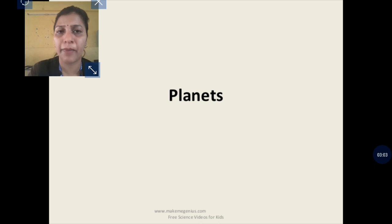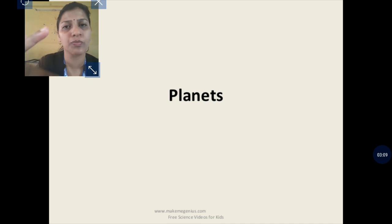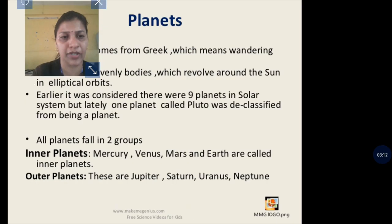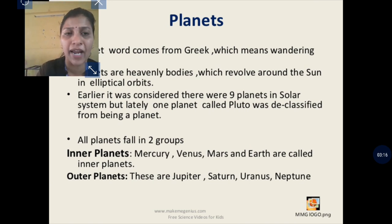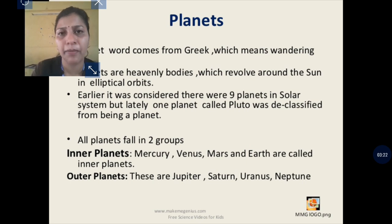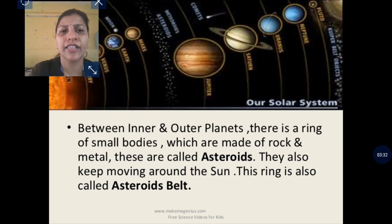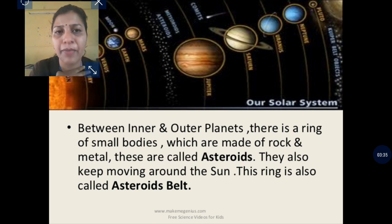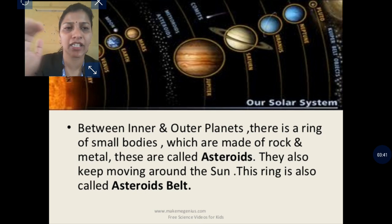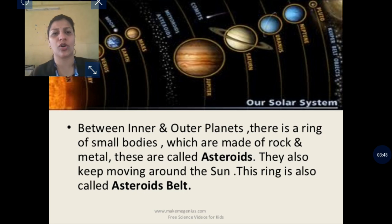There are eight planets, divided into two groups: inner and outer. The inner planets are Mercury, Venus, Mars, and Earth. The outer planets are Jupiter, Saturn, Uranus, and Neptune. The inner and outer planets are separated by rocks called asteroids, which form a belt — the asteroid belt.